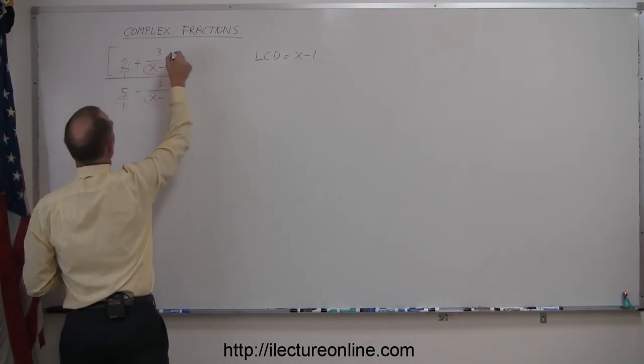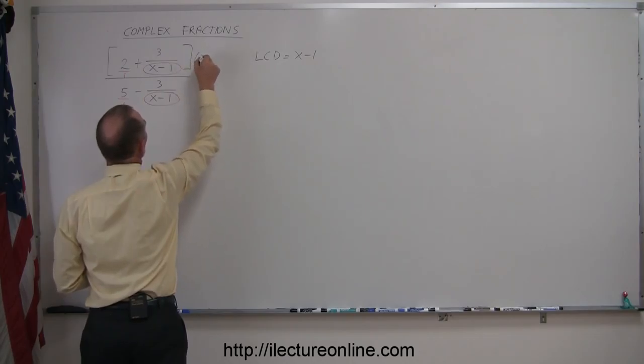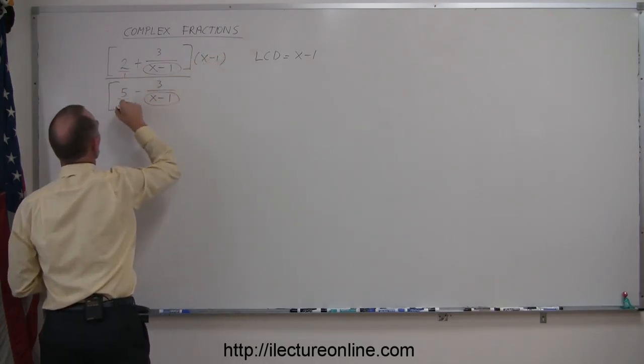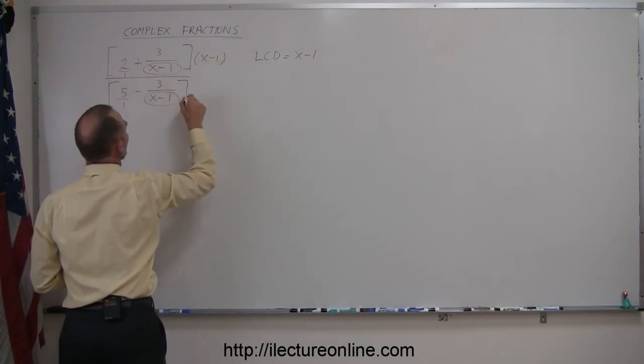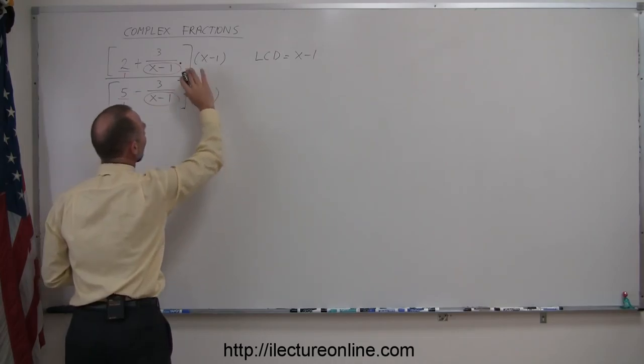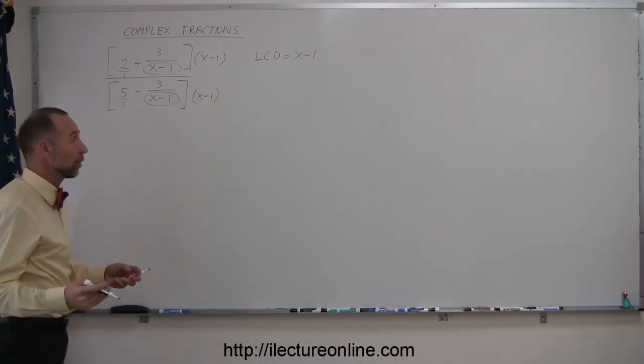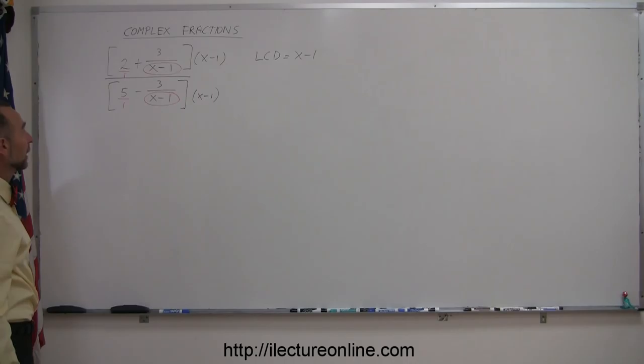So we can go ahead and put brackets here and say we're going to multiply that times x minus one, and put brackets here and multiply the denominator by x minus one. That's in essence the same as multiplying the whole thing by one, and that works. We don't change the fraction that way.